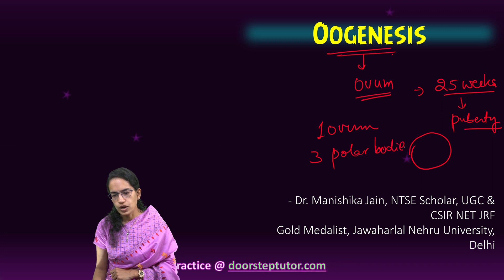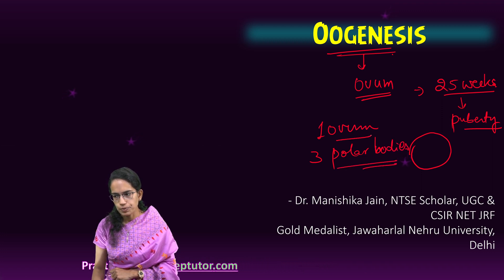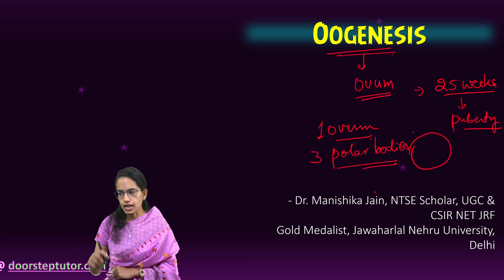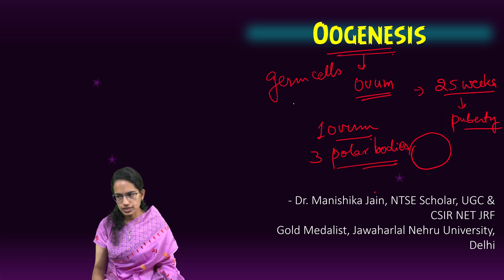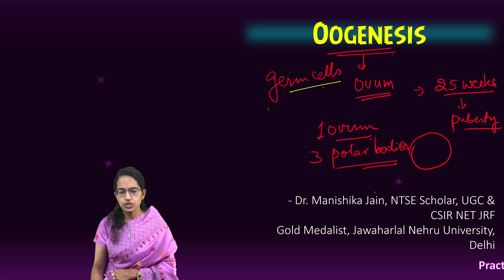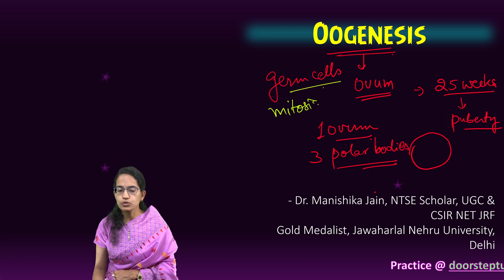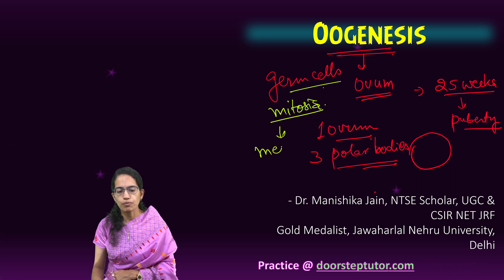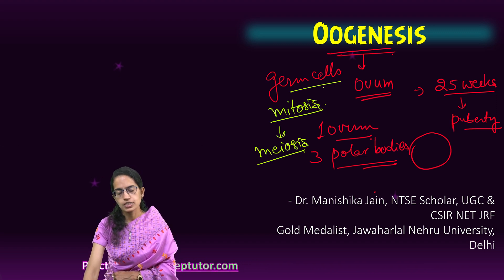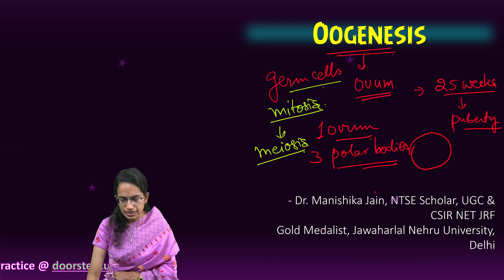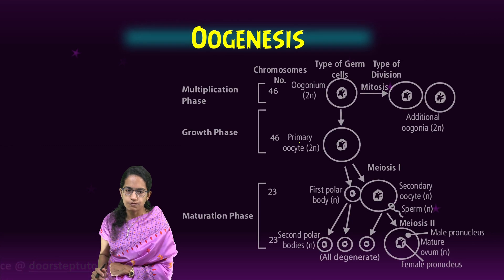Three polar bodies and one ovum are produced every month after puberty. The germinal cells are larger than others and are therefore called germ cells. They help in division. The first division, similar to spermatogenesis, occurs in mitosis followed by meiosis, and then there are three important phases: multiplication, growth, and maturation.